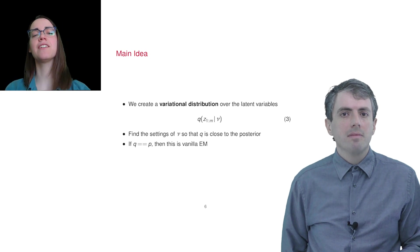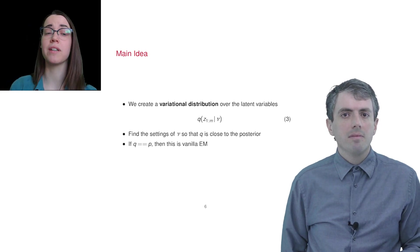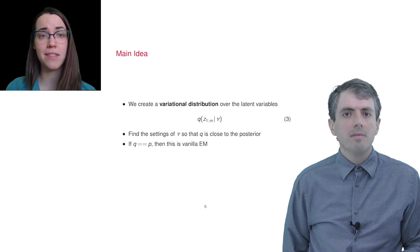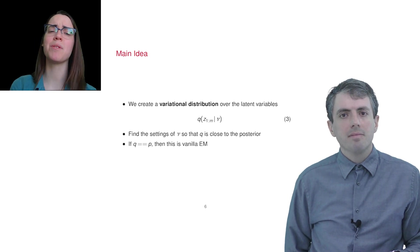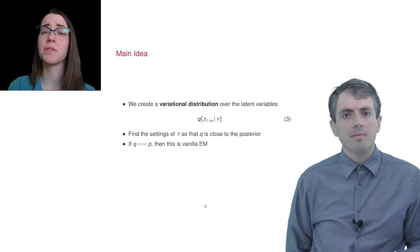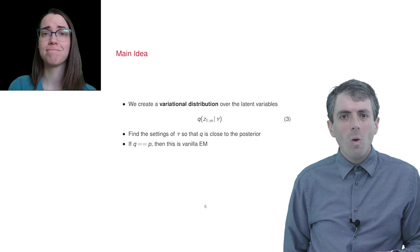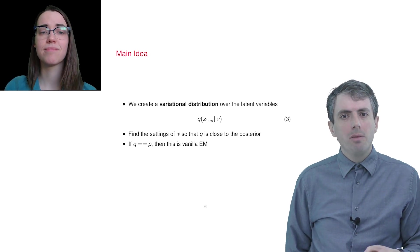The difference here is that you choose a q that is both convenient to work with so that we can find clear parameter updates, and as close as possible to the true distribution over latent variables, p.